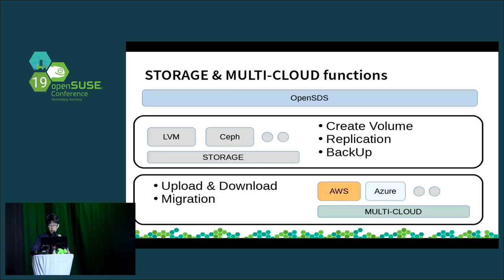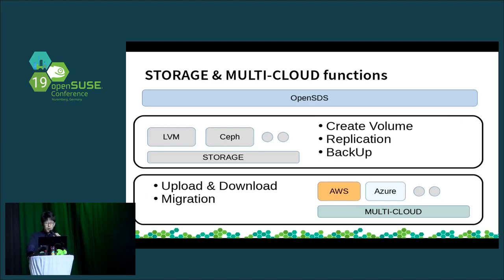I'll tell one scenario. The system requests a volume. OpenSDS creates the volume and replicates. Every day it takes a snapshot. After a month, the system no longer needs the data. OpenSDS moves the data to cold storage, like tape. Note: tape storage has not been implemented yet. About multi-cloud, OpenSDS implements migration — you can migrate data from AWS S3 to Azure storage.